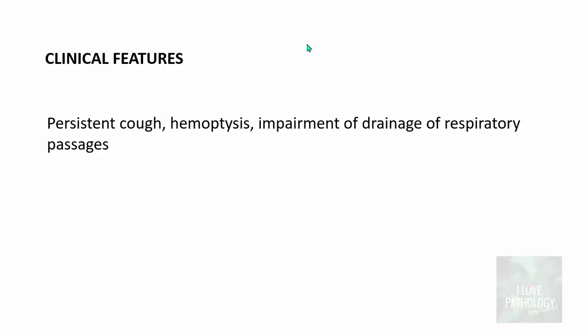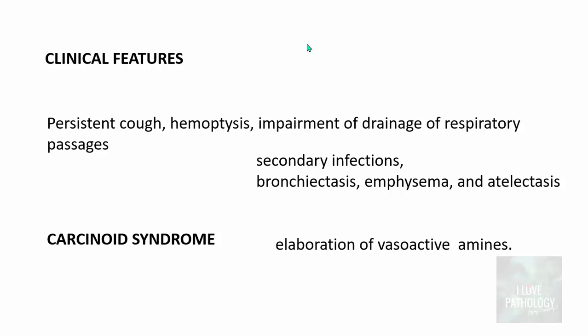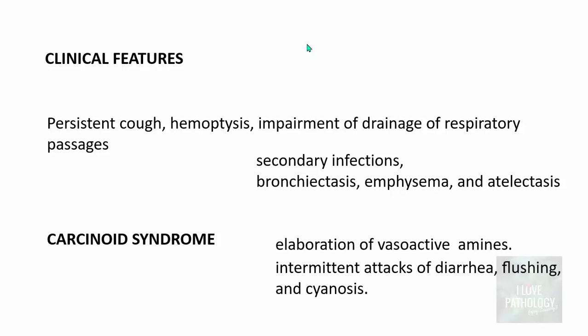If carcinoids form an intraluminal mass, they manifest similarly to lung cancer — with persistent cough, hemoptysis, and impaired drainage of respiratory passages — leading to secondary infections, bronchiectasis (dilatation of bronchi), emphysema, and atelectasis. Sometimes patients manifest with carcinoid syndrome due to elaboration of vasoactive amines like serotonin and bradykinin, causing intermittent attacks of diarrhea, flushing, and cyanosis. Carcinoids have a relatively benign course compared to other lung cancers.